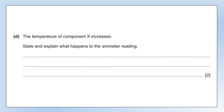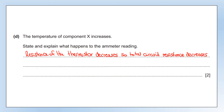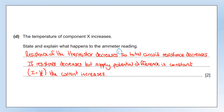The temperature of component X increases. State and explain what happens to the ammeter reading. The ammeter reading is controlled by the total circuit resistance. When a thermistor is heated, its resistance decreases — there's a mark for identifying that. This causes the total circuit resistance to decrease, and since the potential difference stays the same, the current increases. The first mark is for stating the outcome; the second mark is for the explanation linking resistance decrease to current increase.